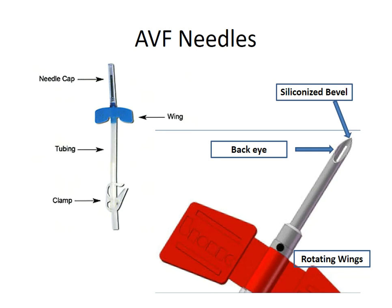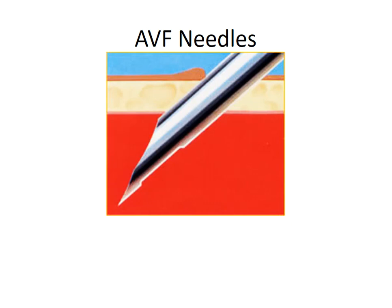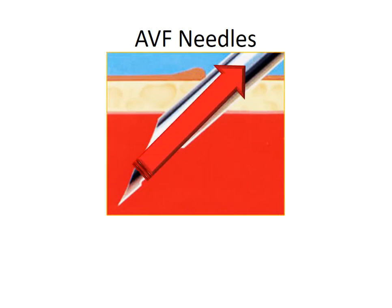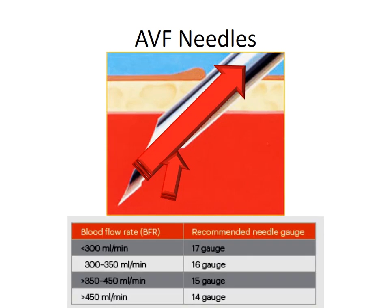The rotating wings help in repositioning the needle during dialysis. Blood can flow through the needle in both directions — from the bevel as well as from the back eye — according to the desired blood flow. You can match the needle size to the required flow: less than 300 mL/min uses a 17-gauge needle, more than 300 mL/min uses a 16-gauge, and above 400 mL/min requires a larger needle size.